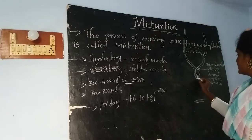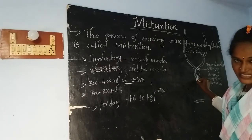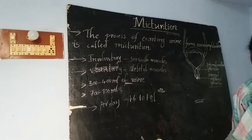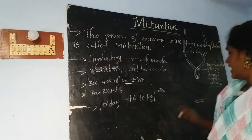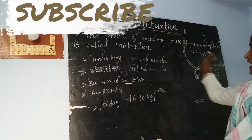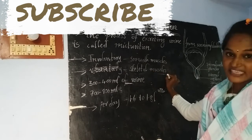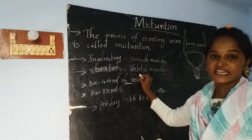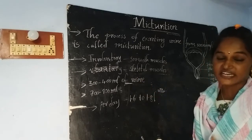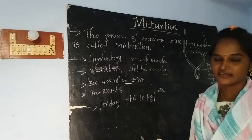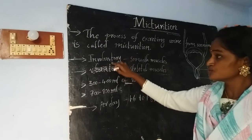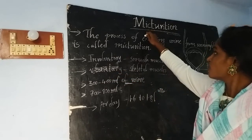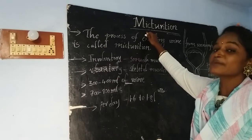The next set of circular sphincters is called as the external urethral sphincter. This sphincter is made up of skeletal muscles and it is voluntary in function — meaning it is under the control of our brain. These two sets of sphincters make the process of micturition happen in a proper way.